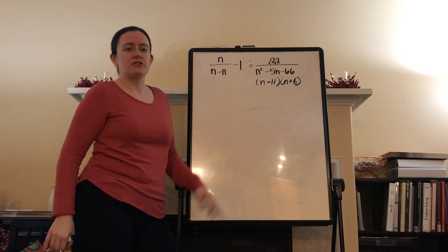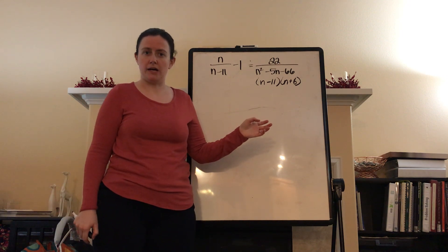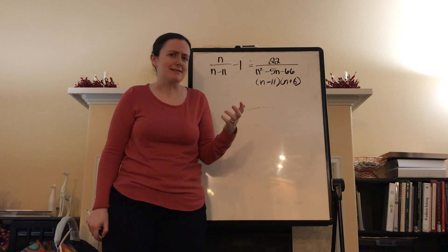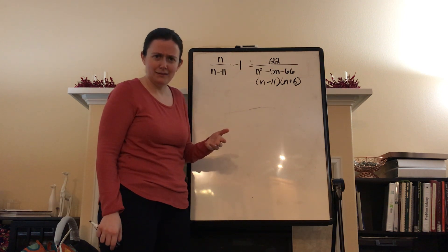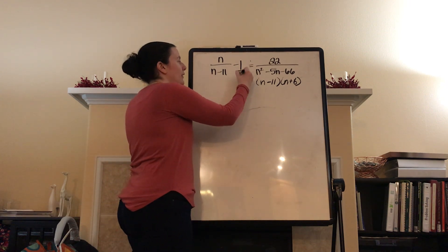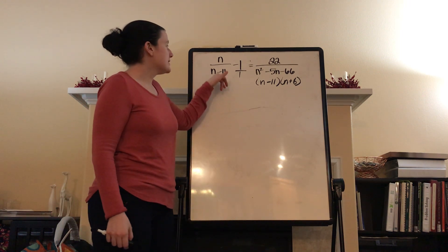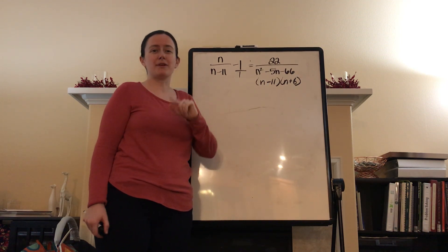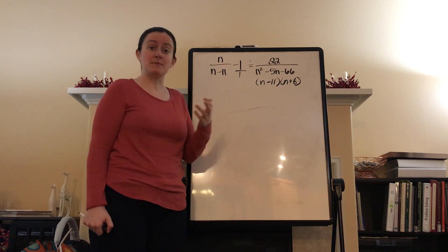You might be thinking to yourself, Mrs. Doomer, but there's that 1 there — what do I do? It's like a whole number, it's got weird pieces. Guys, cool your jets. It's fine. What's the denominator of 1? It's 1. The denominator of 1 is 1 — 1 over 1 equals 1. Pretty simple. So you can see this one has an (n minus 11), this term has a 1, and this has (n minus 11) times (n plus 6). So what is the common denominator? It's (n minus 11) times (n plus 6).